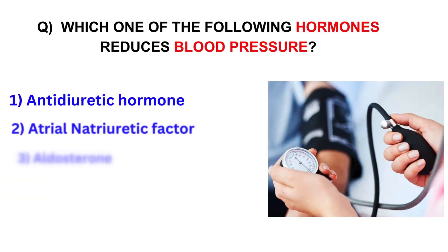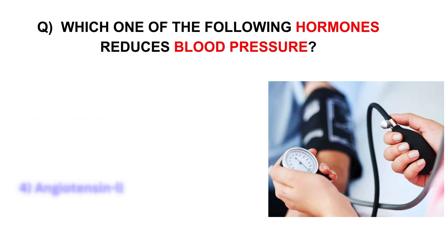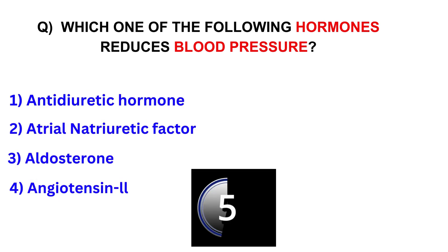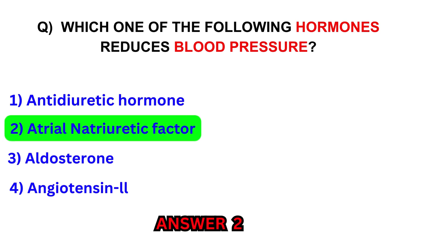Which one of the following hormones reduces blood pressure? Antidiuretic hormone, atrial natriuretic factor, aldosterone, or angiotensin II. Answer: Atrial natriuretic factor.